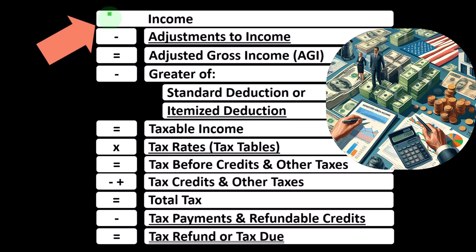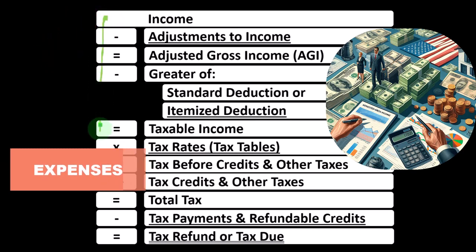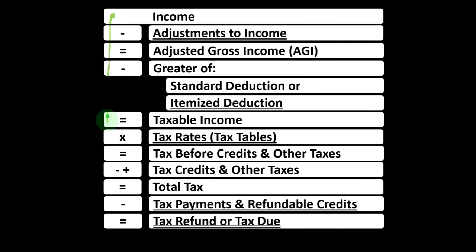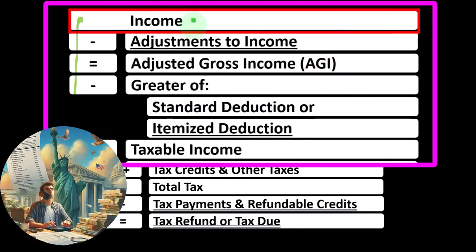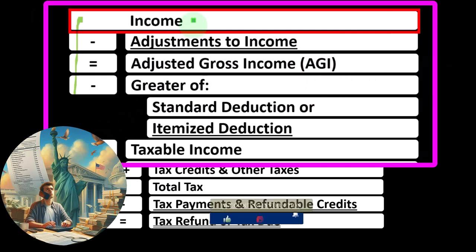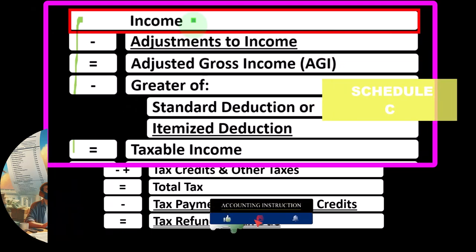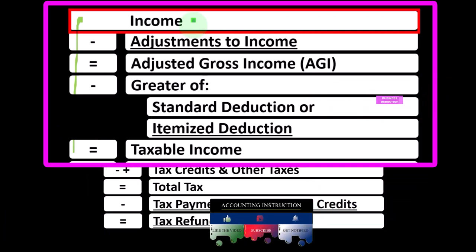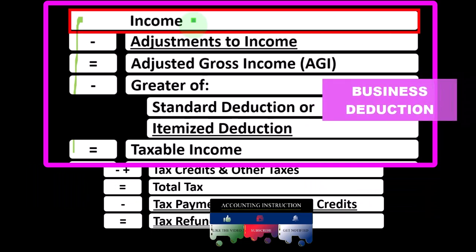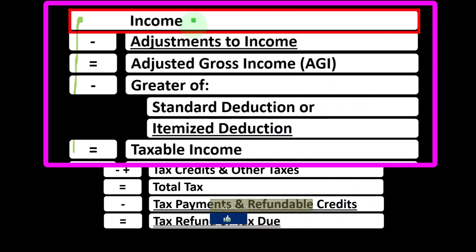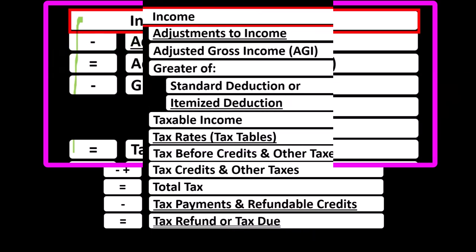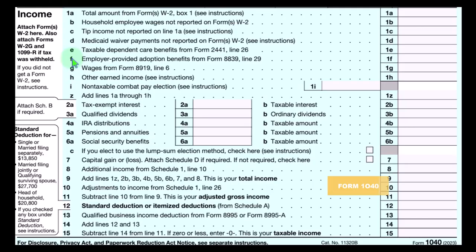Recall that in the first half of the income tax formula — basically a modified income statement — most income statements have income minus expenses resulting in net income. Here we have income minus various deductions resulting in taxable income. The sole proprietorship Schedule C ultimately rolls into line one of the formula, with the Schedule C itself being an income statement: business income minus business expenses, resulting in net business income.